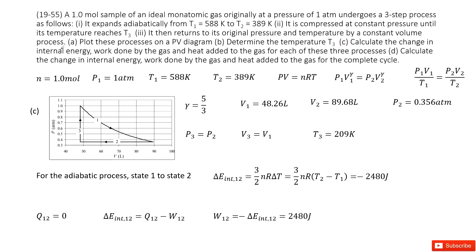The next part asks you to find the change in internal energy, work done by the gas, and heat added for each of the three processes. The first process is the adiabatic process from P1,V1 to P2,V2. We can write the internal energy change as n*Cv*ΔT, which equals (3/2)*nR*(T2 - T1).